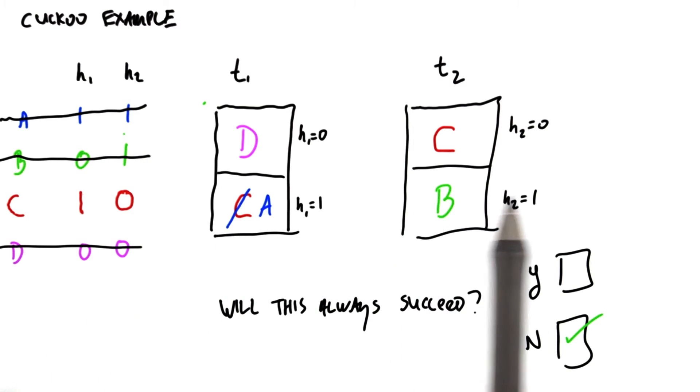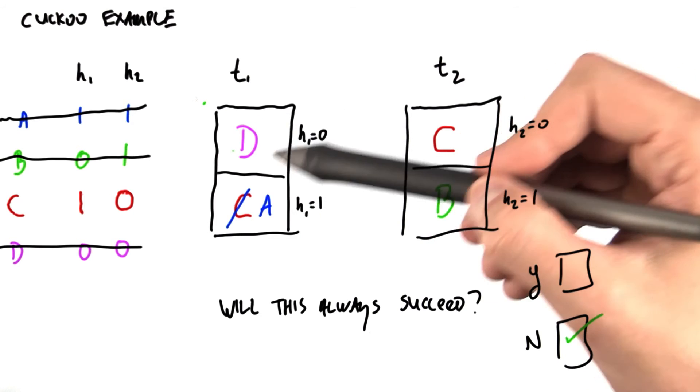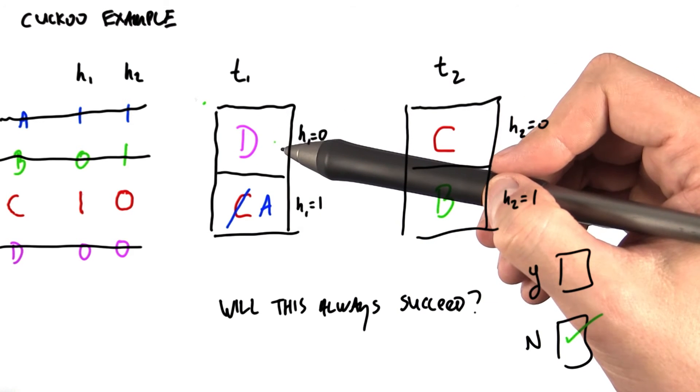So what I'm going to do is I'm going to look in all the tables using the particular hash functions until I find what I'm looking for. So first, I'm going to look in table 1, and I know that I'm going to look in slot 0. Here, I look in slot 0, and I say, wait a second, that's not B.